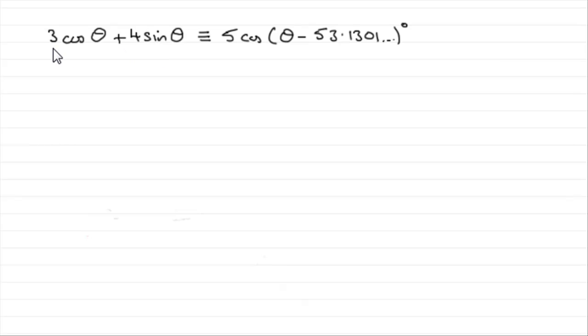Now in the first part of the question we showed that 3 cos θ + 4 sin θ was identical to 5 cos(θ - 53.1301...) degrees and we can use this fact to find the maximum value.